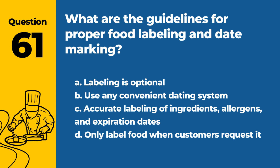Question 61. Answer: C. Accurate labeling of ingredients, allergens, and expiration dates. Proper labeling is essential for food safety, ensuring clear identification of ingredients, allergens, and expiration or use-by dates.